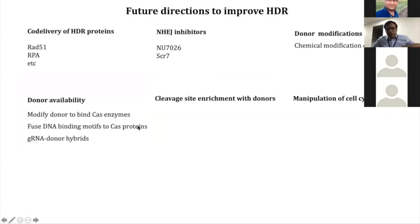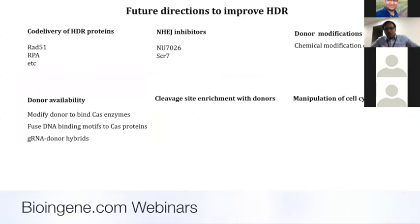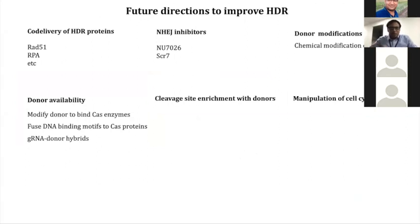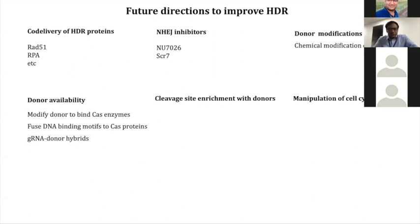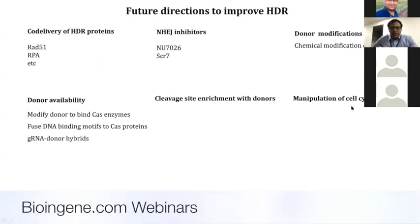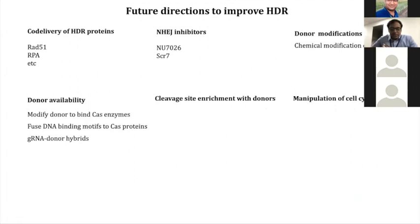Once we have the platform for conducting high-throughput precise genome editing experiments, we are now awaiting data from our experiments related to delivering DNA repair proteins, pathway inhibitors, and some modifications we have conducted on the donors. We have also done experiments with donor availability by modifying the CRISPR enzyme itself, and are yet to conduct experiments on cleavage site enrichment with the donor and manipulation of cell cycle using reagents that can modify the cell cycle.